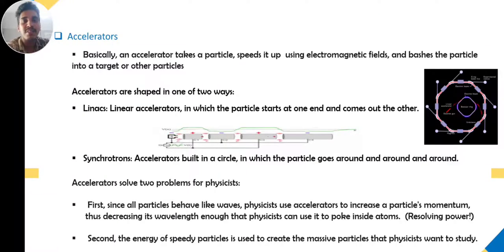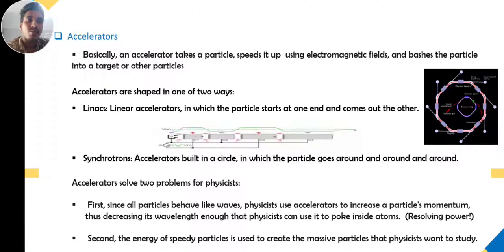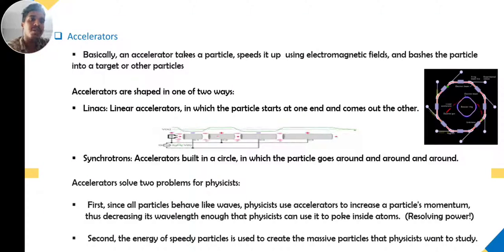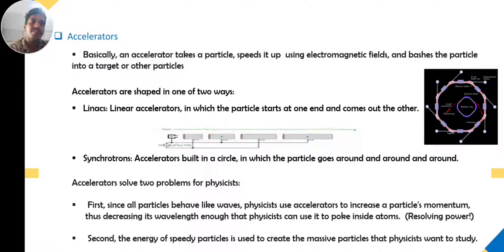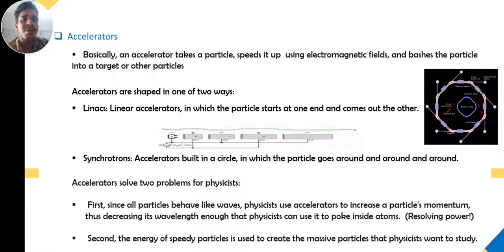The other type is called a synchrotron, also known as a circular accelerator — built in a circle in which the particle goes around and around. As you can see in the figure, a circular particle path is started with a linear accelerator, kept rotating along the path, and finally comes out at some point using a beam line to be collected or incident on a particular target.